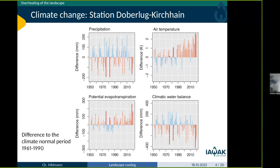We are much warmer today, and this is not without impact. If we calculate the potential evapotranspiration, we can see it is normally higher than in the climate normal period. The climatic water balance calculated from these values is highly negative in recent years. This is a significant problem for the landscape.